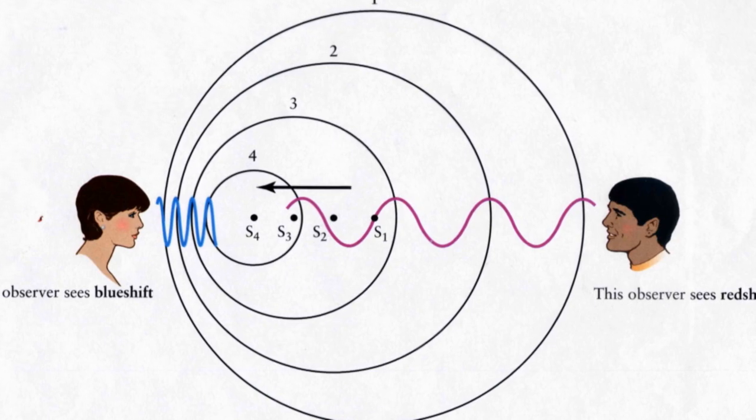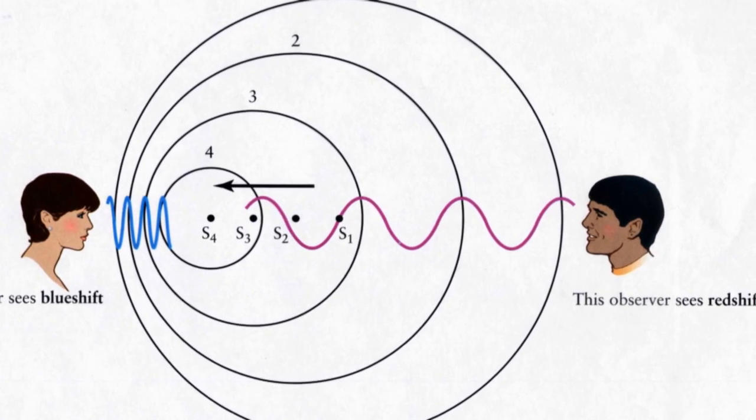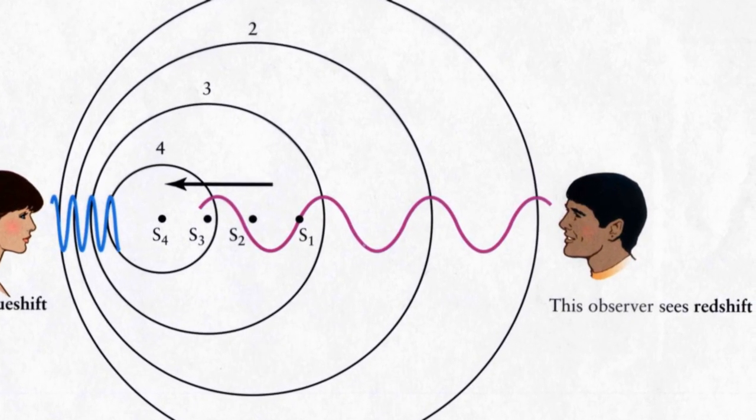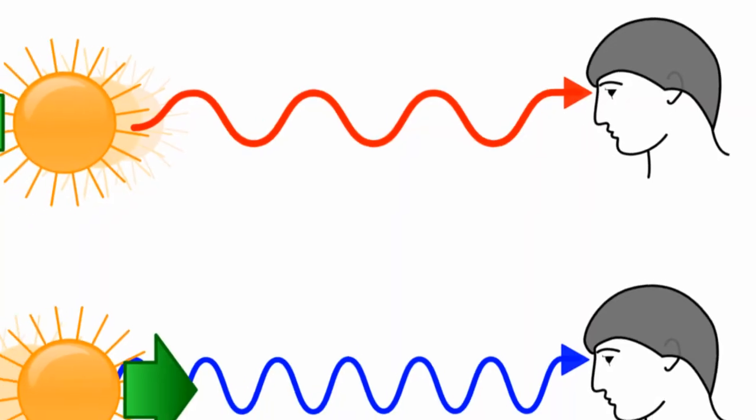Likewise, when a light source travels away from you, the waves emitting from it are stretched out, resulting in longer wavelengths. This is known as redshift.